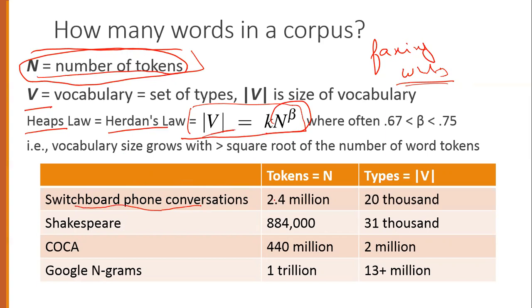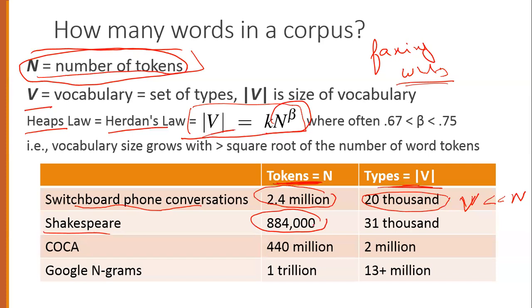For example, the Switchboard phone conversation corpus has a total of 2.4 million tokens and a unique vocabulary of 20,000 words. In Shakespeare, the total number of tokens is 884,000 and unique vocabulary is 31,000. There is also the POCA dataset with 440 million tokens. When building or analyzing a corpus for any NLP task, we must extract these statistics.